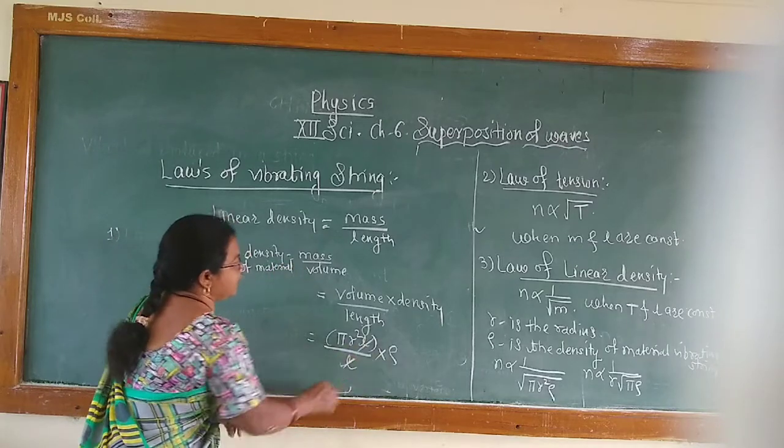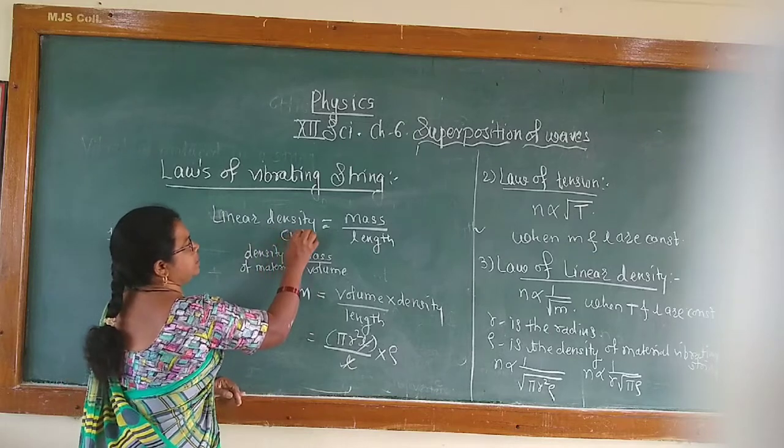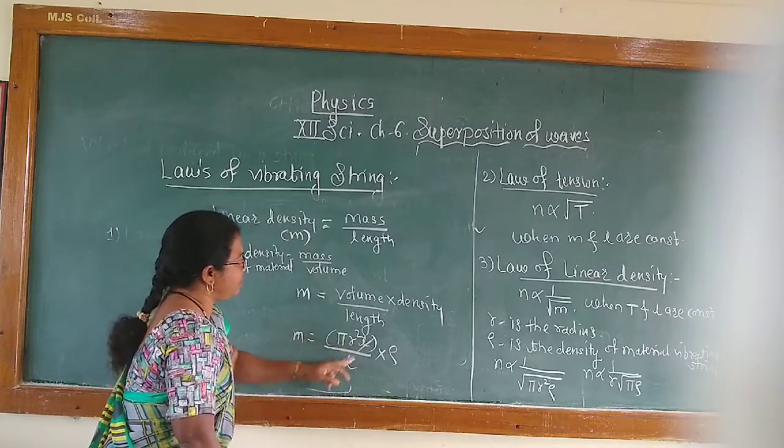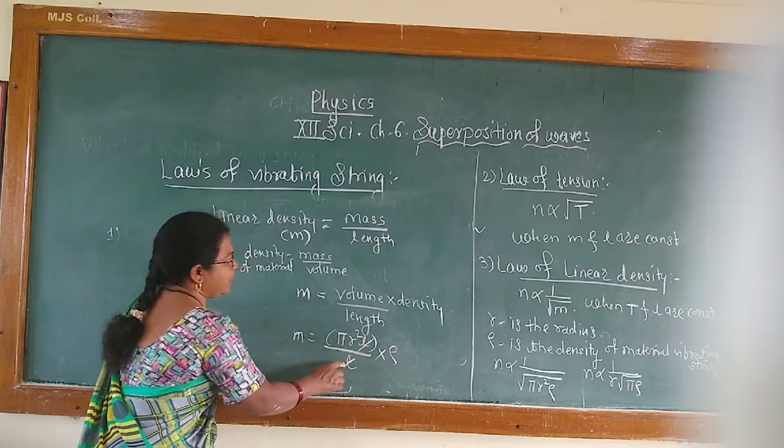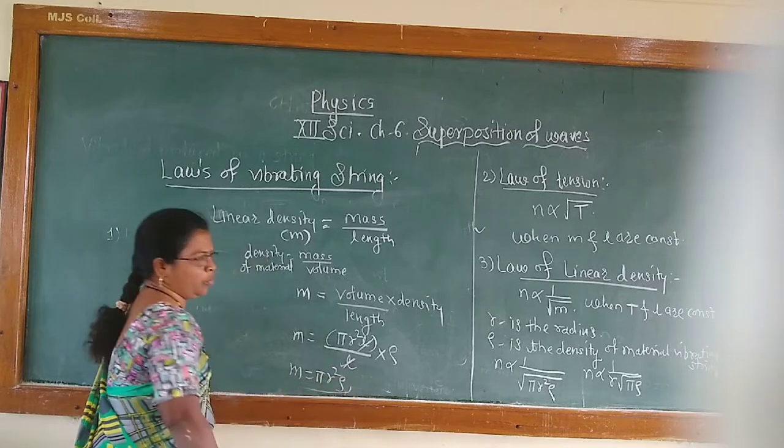Then L, L get cancelled here. We got small M, the linear density. Small M is equal to pi R square into rho.